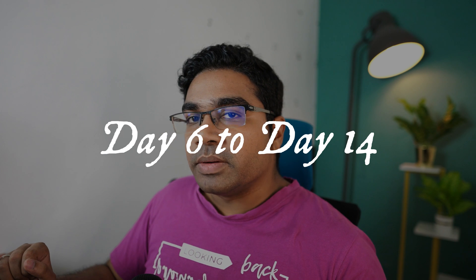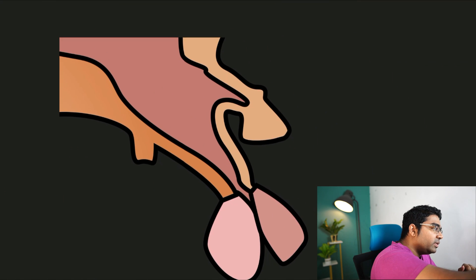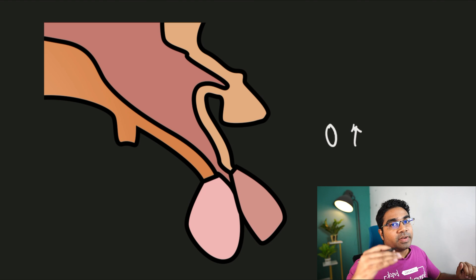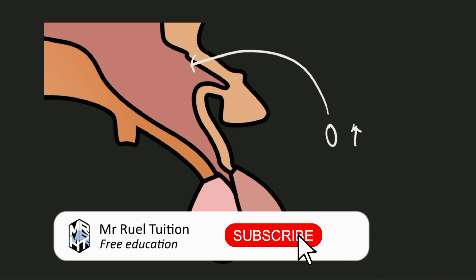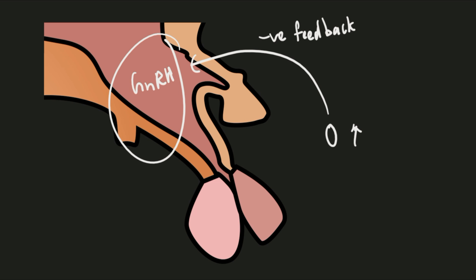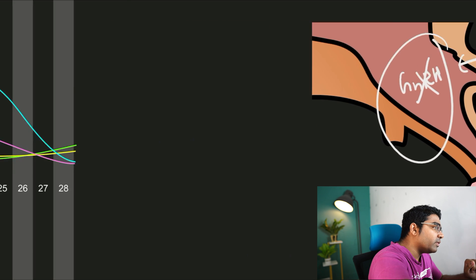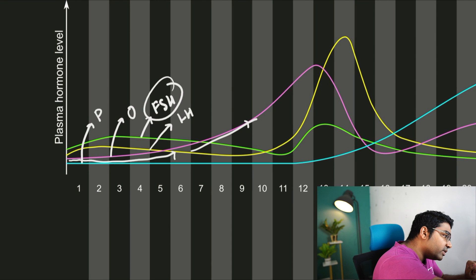From day six to day 14, as estrogen levels continue to rise, these relatively low levels of estrogen exert a negative feedback on both the hypothalamus — reducing GnRH release — and on the anterior pituitary, inhibiting the release of FSH and LH. We can see in the plasma hormone levels that FSH (the green line) and LH (the yellow line) start to decline.